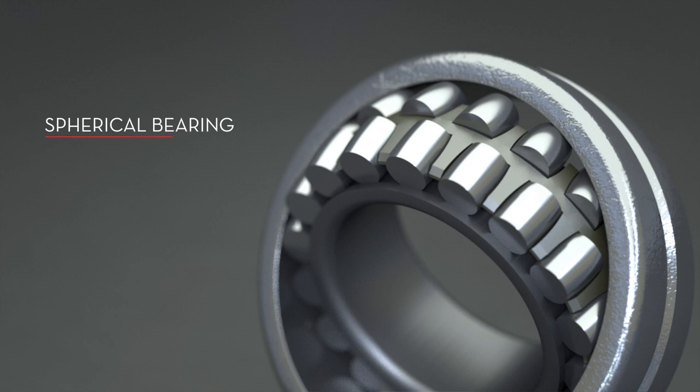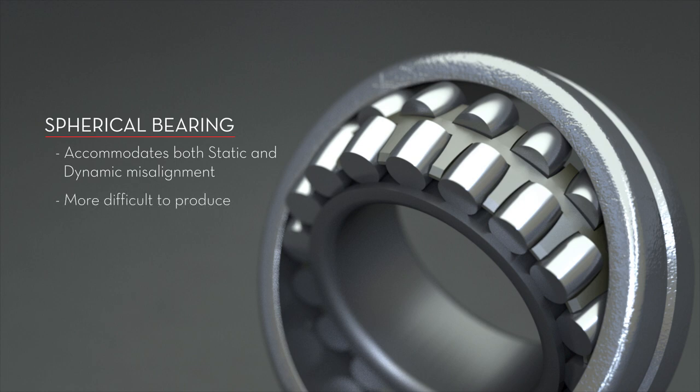With a spherical roller bearing, rollers are thicker in the middle and thinner at the ends. This type of roller can accommodate both static and dynamic misalignment better than other bearing types. Spherical rollers are more difficult to produce, with higher friction than cylindrical rollers.